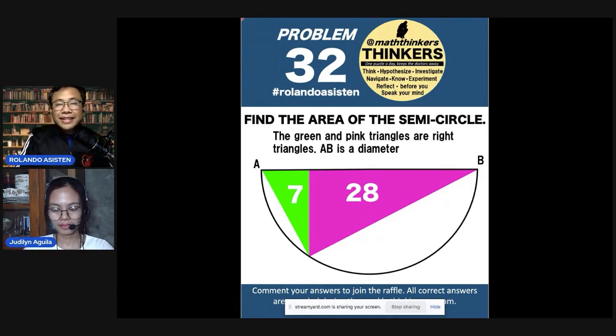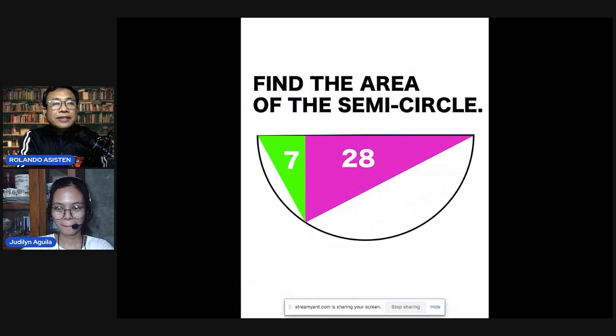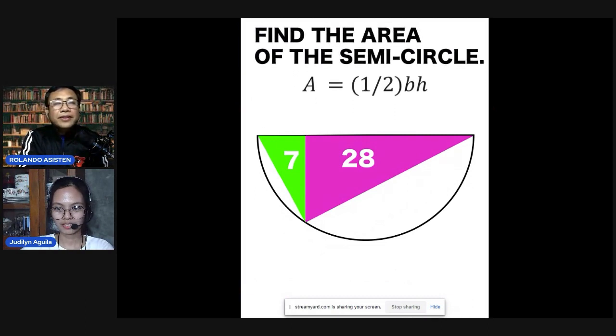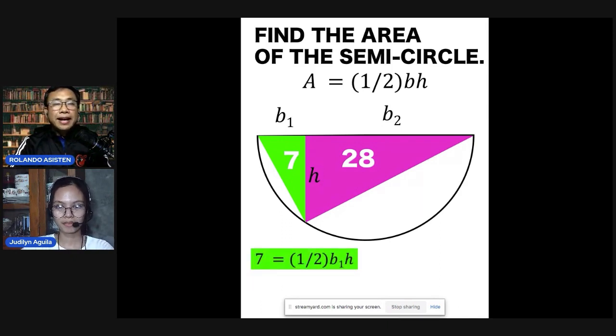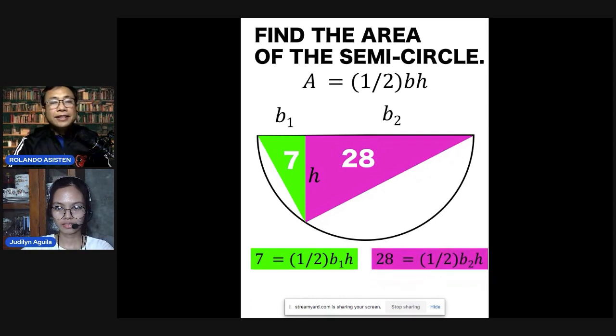So what's the answer to this question? Let's discuss the answer. So first, let's recall that the formula for the area of a triangle is one half base times height. Since we know that the area of the green triangle is seven, then we can substitute that in the formula. But we need to identify what is the base and what is the height. So we let h be the common height of the pink and the green triangles, and let's call the base of the green triangle as b sub 1 and the base of the pink triangle as b sub 2. Then substituting that in the formula, area equals one half base times height. So for the green triangle, we have seven for the area, one half times b sub 1 times h. And substituting that for the pink triangle, we have this equation.